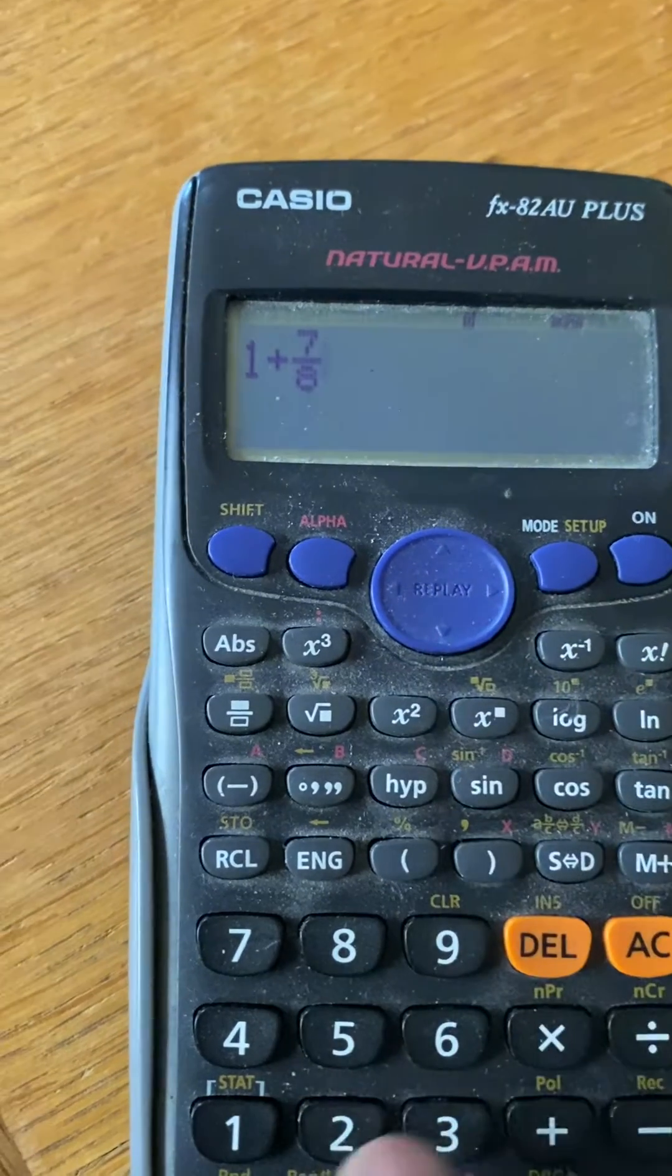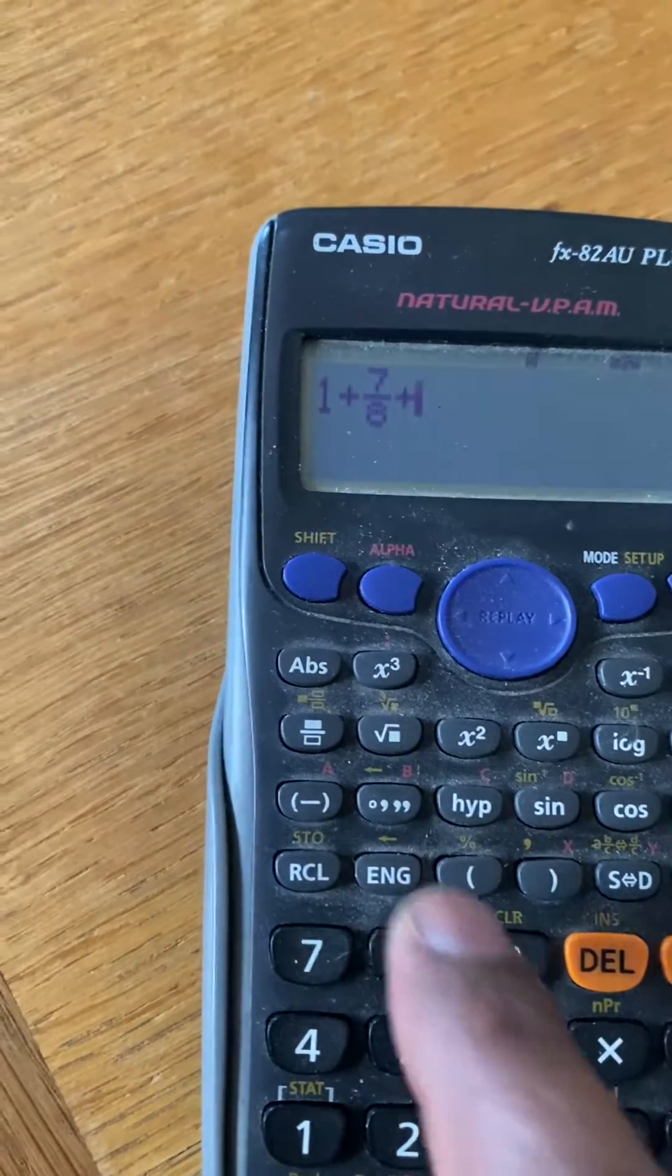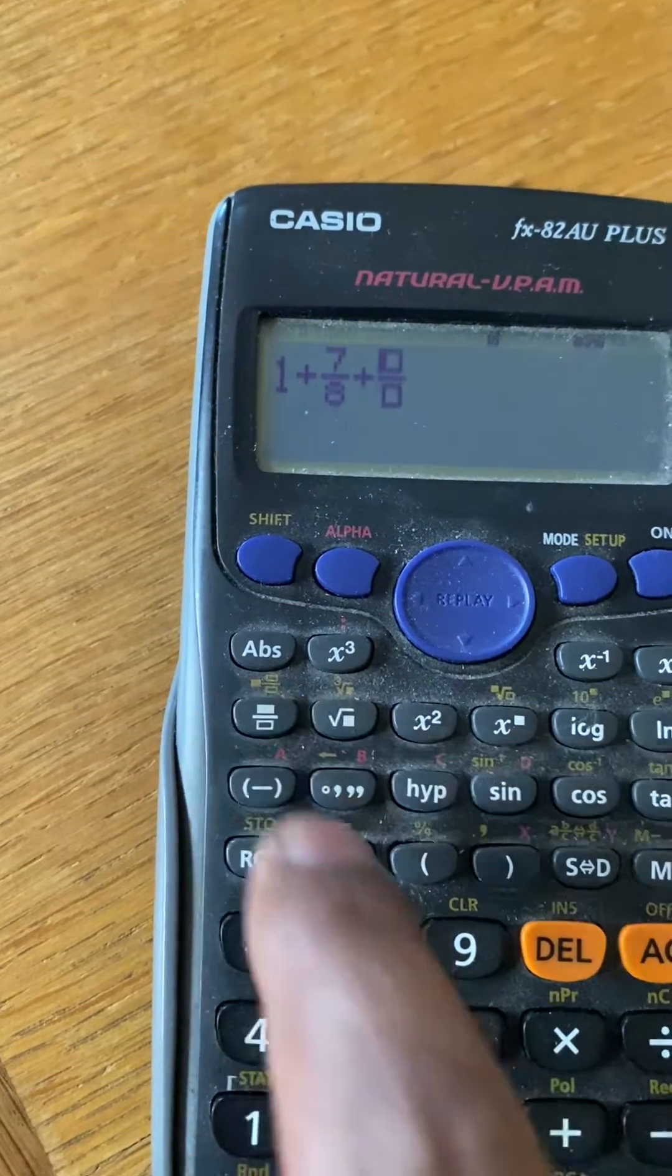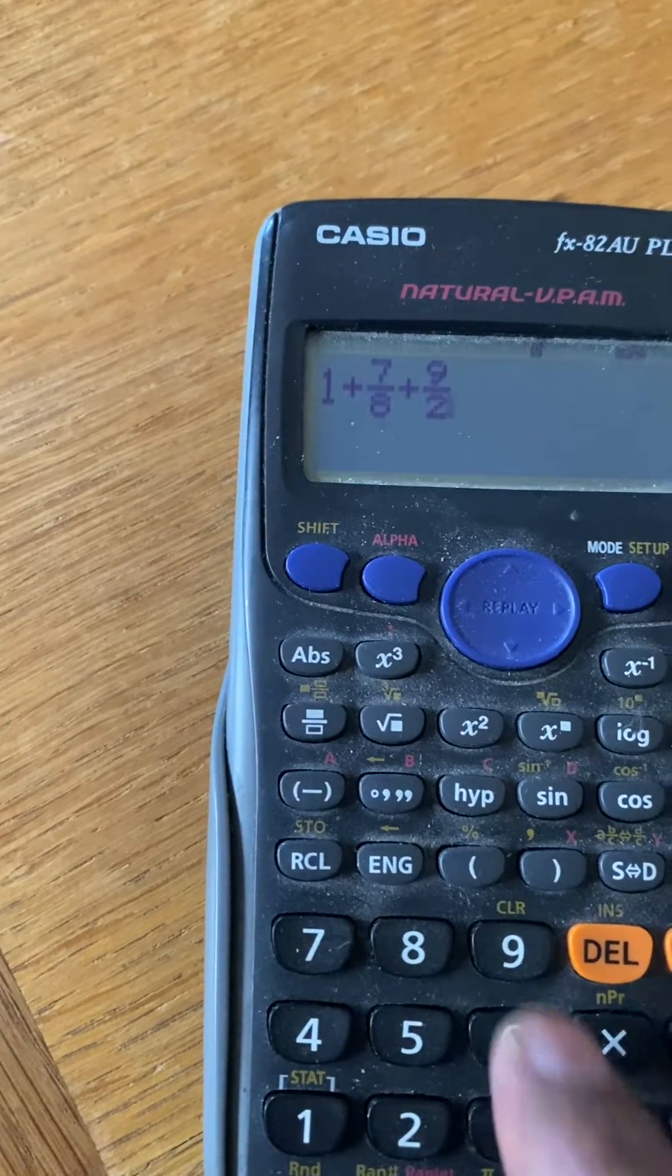I put the side arrow key and add the next number. Let's say the next number is 9/2. I will again press the fraction key, put 9 here, press the down key, put 2 here, then again